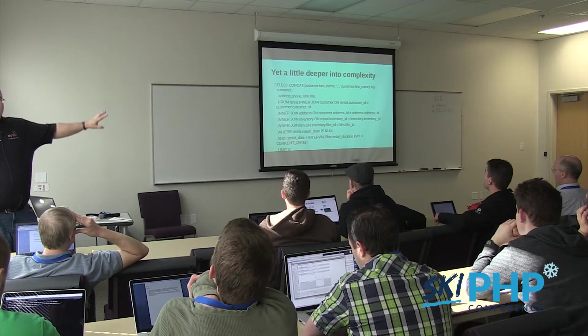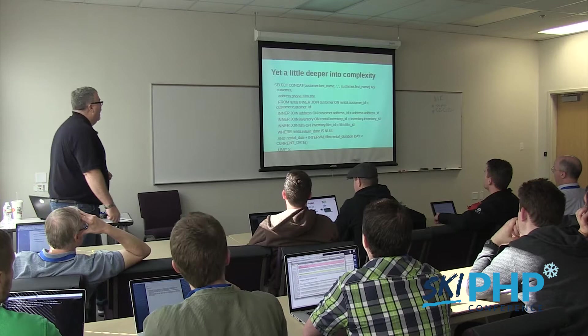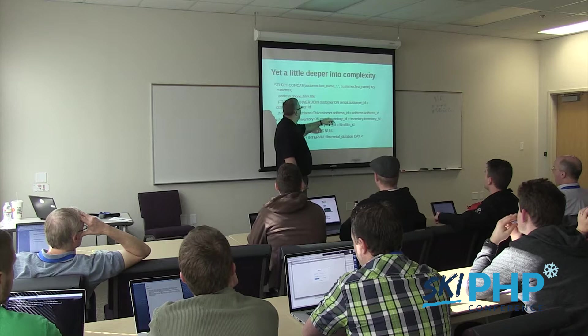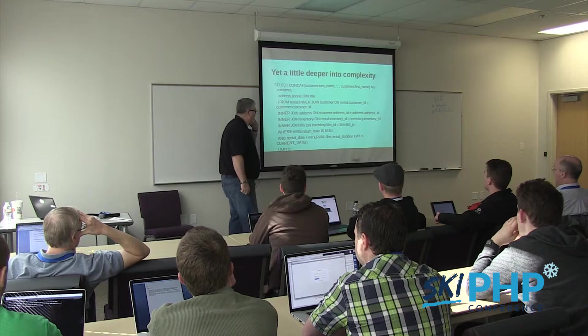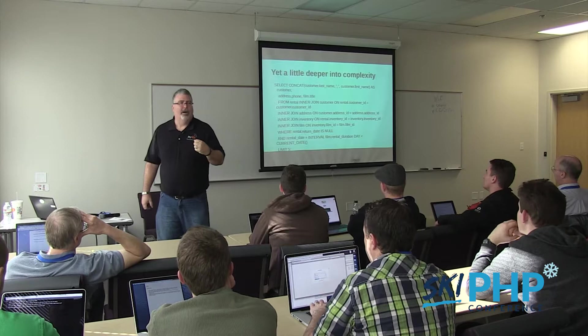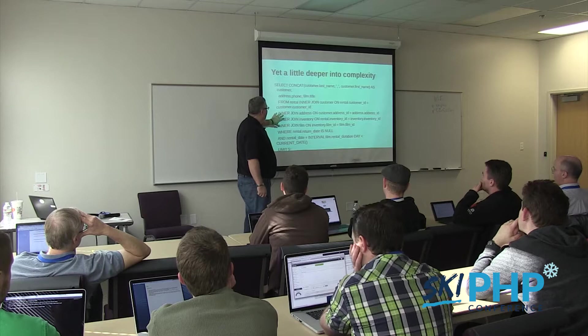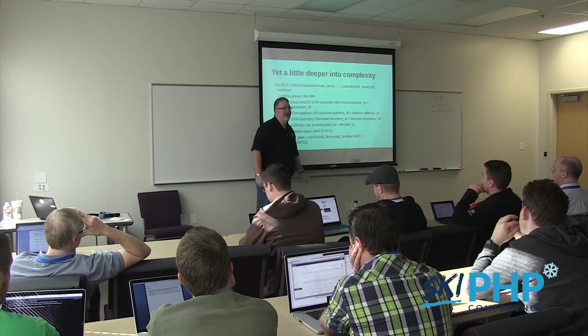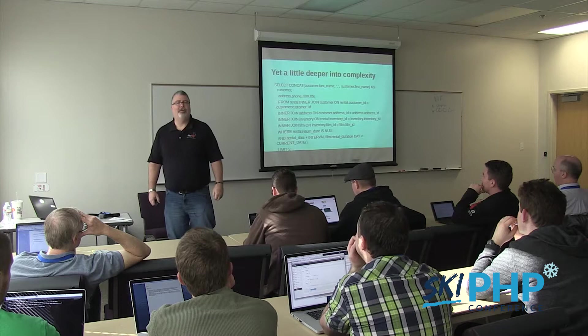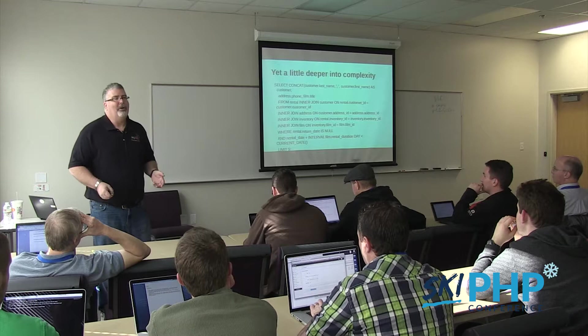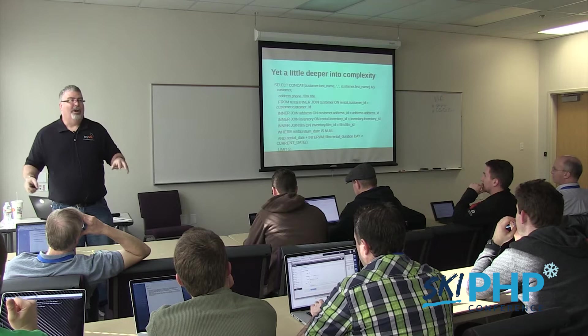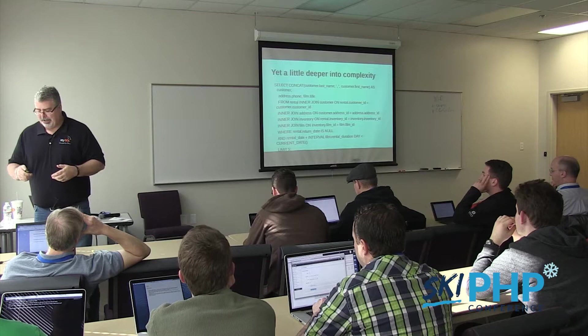How many of you have queries that look like this? We're doing some stuff where we're putting names together from another test database called Sakila, which is basically a video rental database. This is fairly nasty because we have four INNER JOINs and we're looking for rental return date IS NULL. When setting up your indexes, avoid NULL if you can — NULL is a non-value, something that has no value. Databases work really well with binary values: something is there or it isn't. If you have a NULL value, it complicates the logic and slows things down.